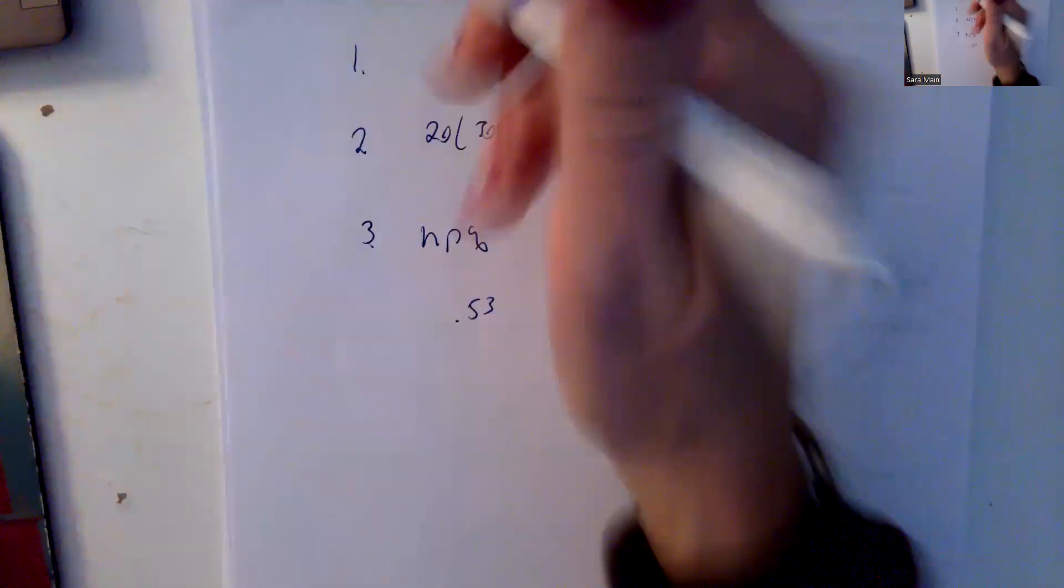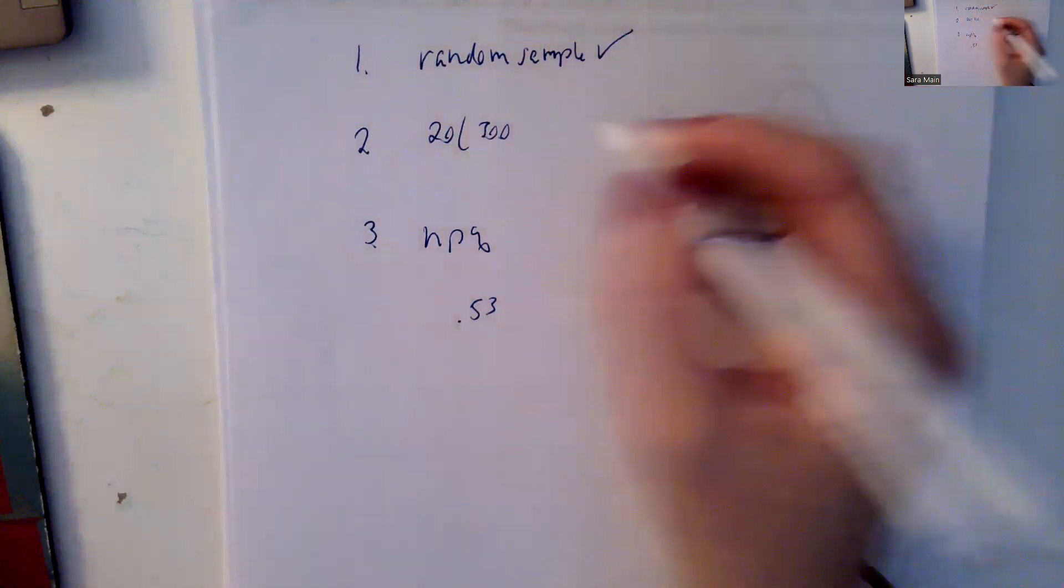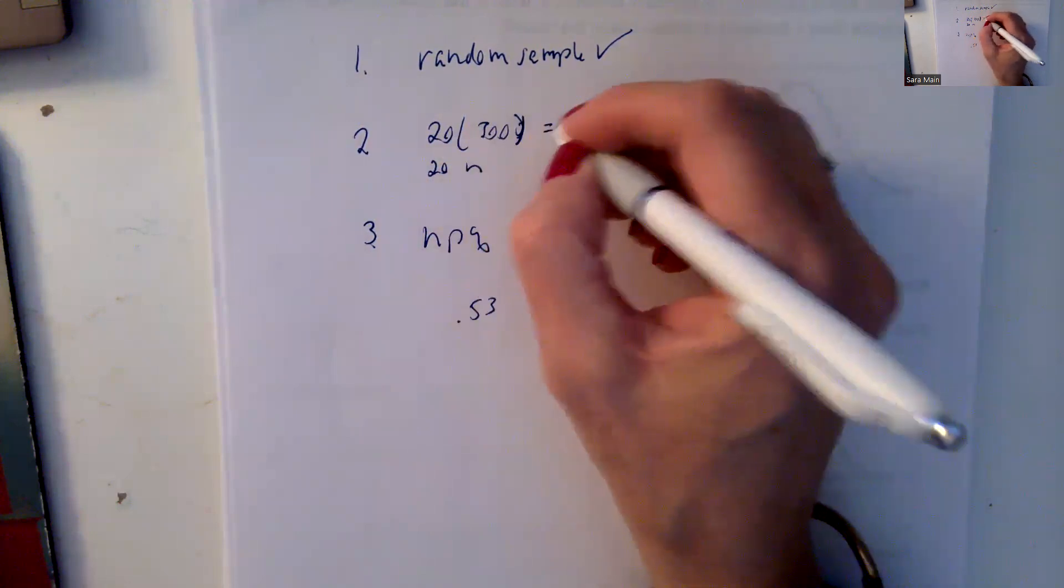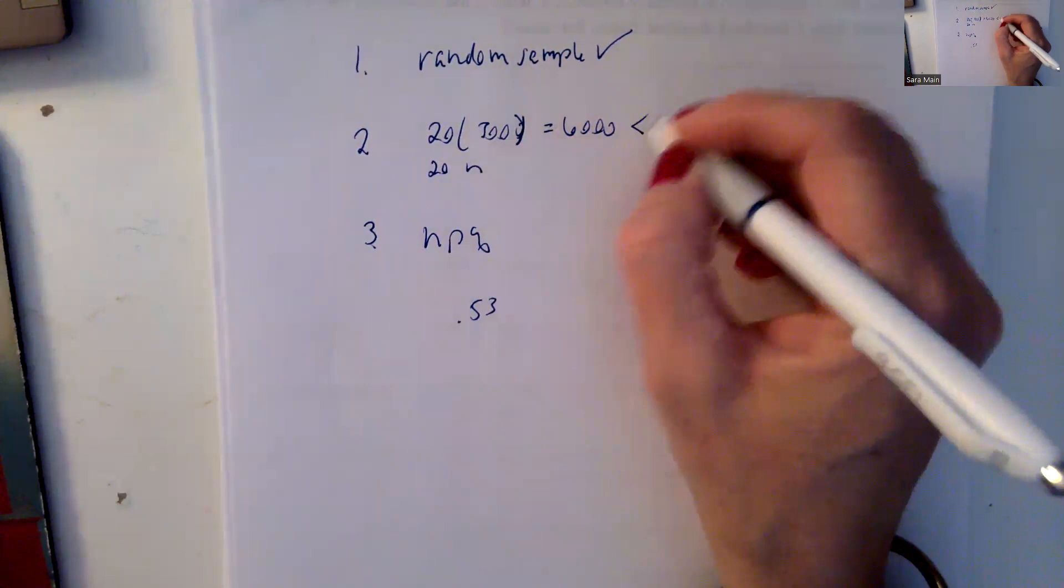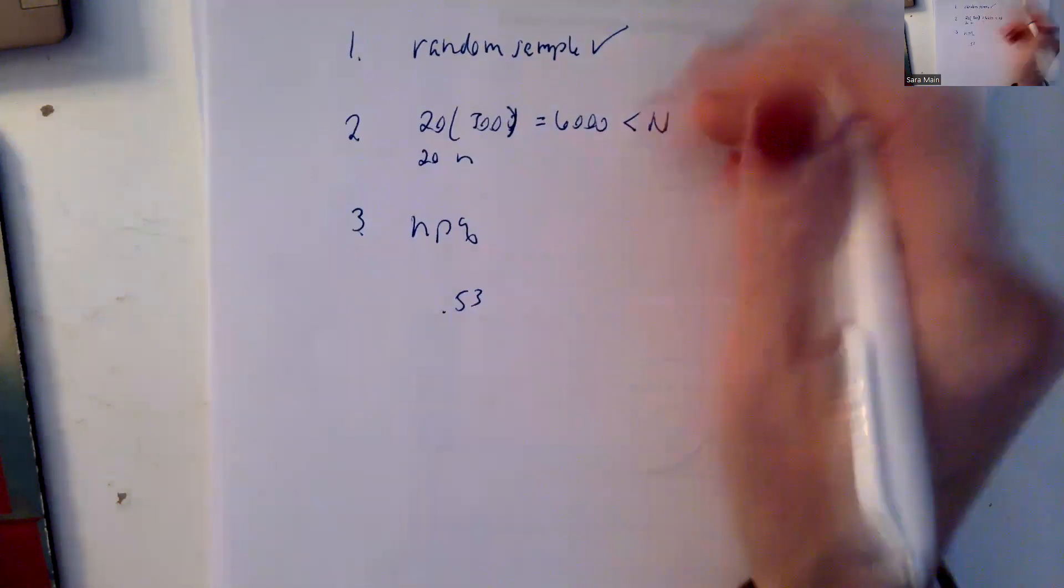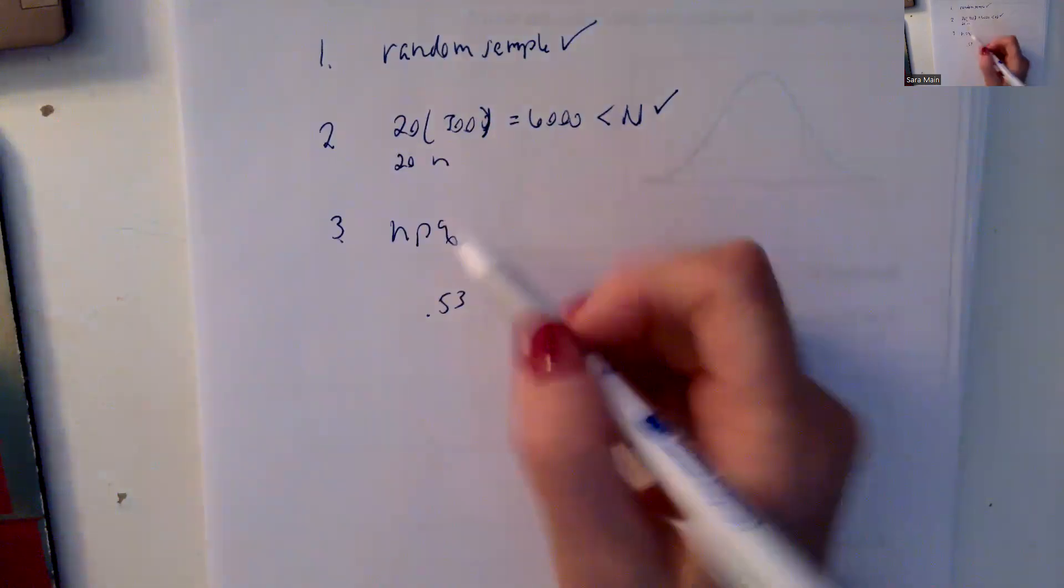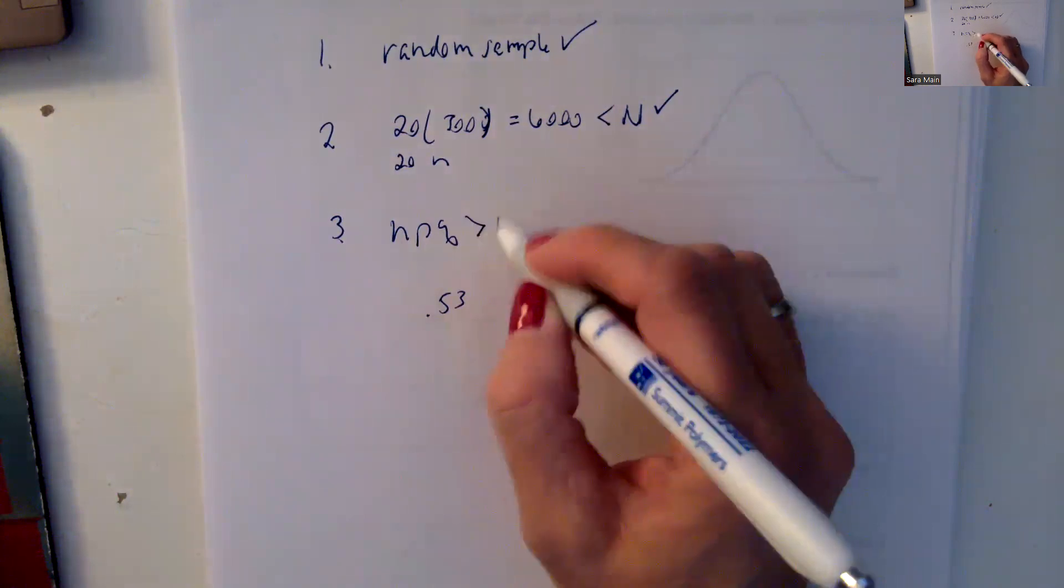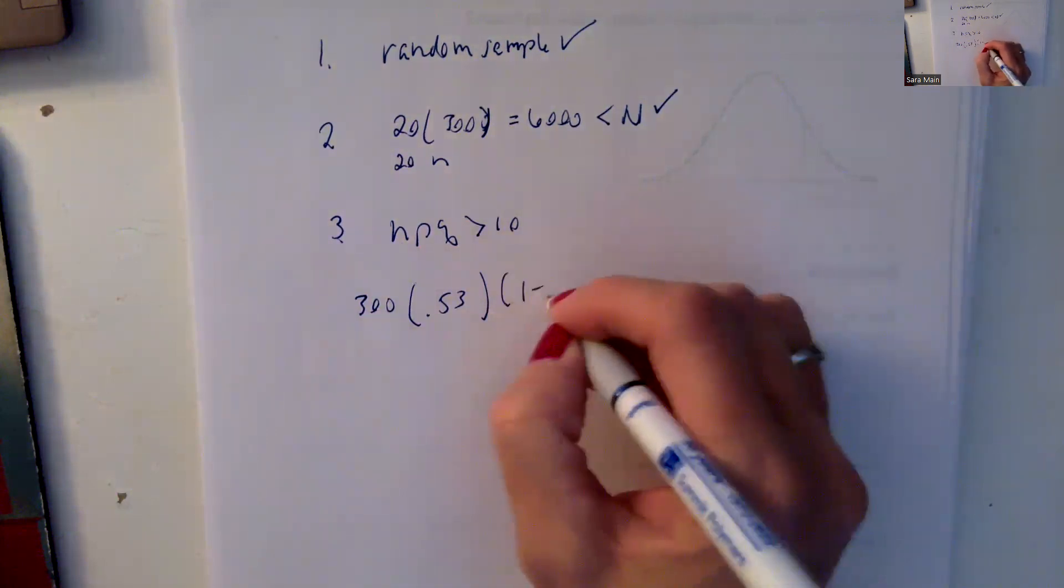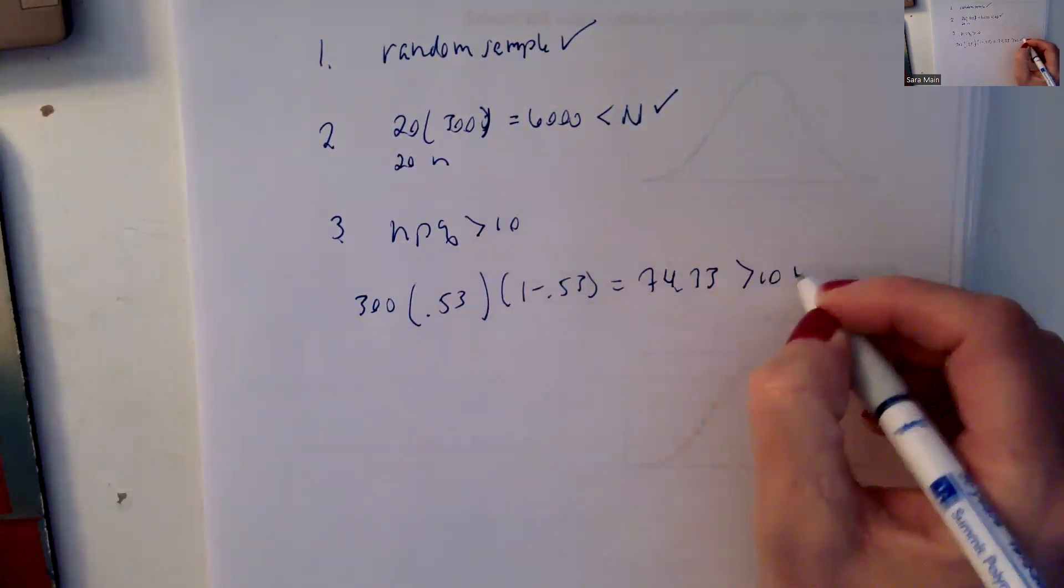So they told us it was a random sample, but you need to acknowledge that for me with a check mark. Then, I am looking at 20 times my sample size. So my sample size is 300. So 20 times 300 is 6,000. I am asking myself, do I think there's at least 6,000 families to check about this charter school? Yes, I do. So I'm checking that. You need to show me numerically the 20 times N. Then, because we're talking about proportions, we have to check that N times P times Q is greater than 10. So N is 300 times P, which is 0.53, times Q, which is 1 minus 0.53. And I believe that that comes out to be about 74.73. And that is greater than 10. So we can say, yes, it's normal.